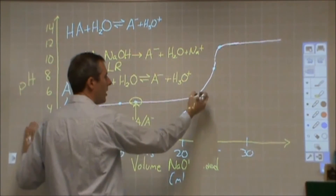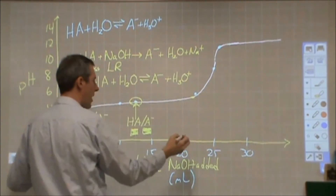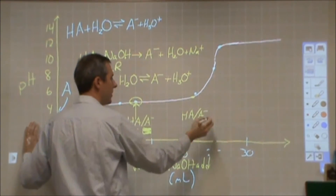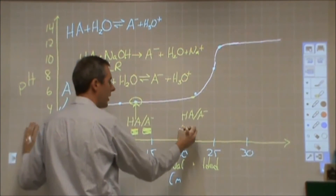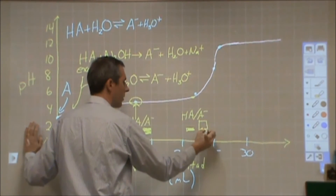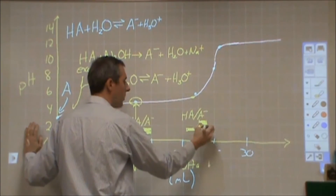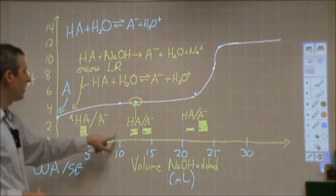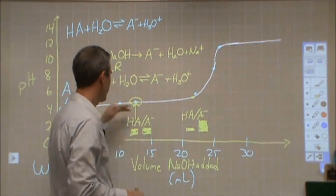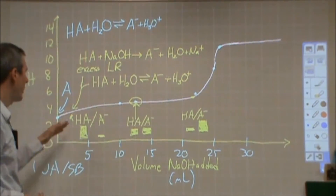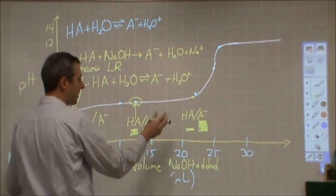As I continue along toward the equivalence point, I'm looking at a case where nearly all of my HA has been neutralized, and I'm ending up with a large amount of A⁻ and very little HA in excess. So we're role-reversing here — shifting from the weak acid to its conjugate base. That's why the pH is slightly increasing as we move all the way across this buffering region.